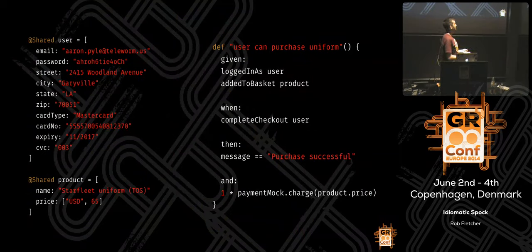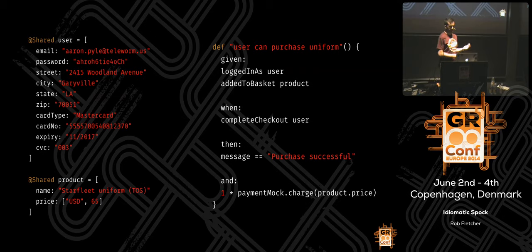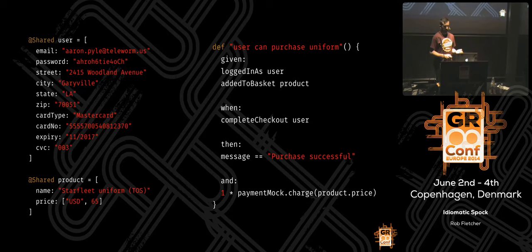A cleaner way to do this is to refactor the spec so it uses simple helper methods. Given that we are logged in as this user, we create a user object marked as shared so it's only initialized once. Given that we've added this product to the basket, there are the product details. When we complete the checkout, then we see the success message and the credit card gets charged. This is similar to the page object model — it breaks your test into logical steps, takes a higher-level approach, is far more readable, and externalizes reusable data that could be used across multiple specs.